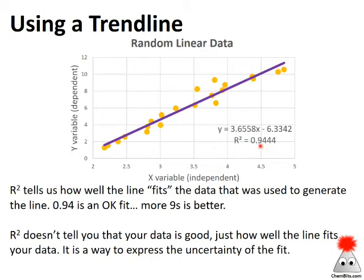Good r squares usually have at least two or three nines as their lead digits. So 0.99 something. This one at 0.94 is okay. It's not spectacular, but it's pretty good. Part of the reason it's as low as it is, is because I've got a lot of data points here.